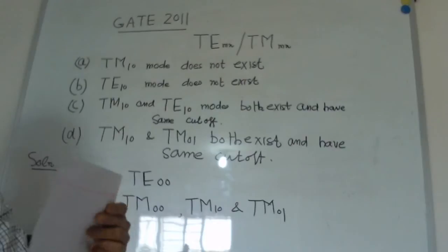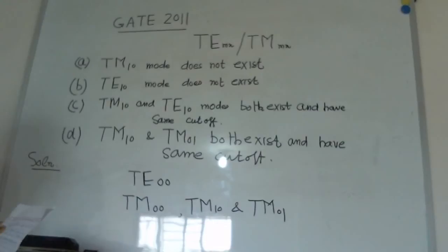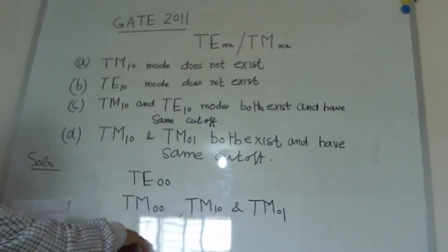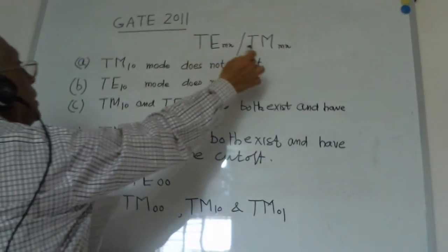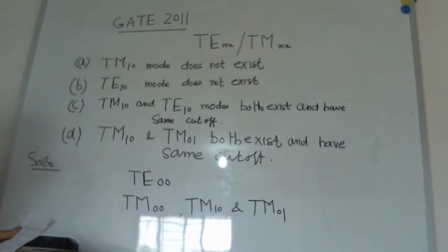The problem states that the modes of rectangular waveguides are denoted by TE_MN and TM_MN, where M and N are mode numbers along the larger and smaller dimensions of the waveguide respectively. Now we have to find out of these four options which is the correct option.